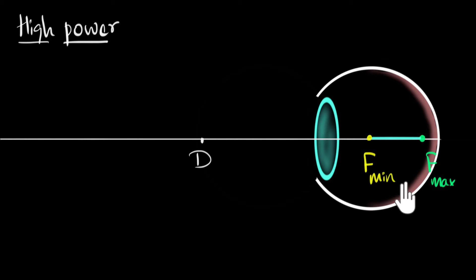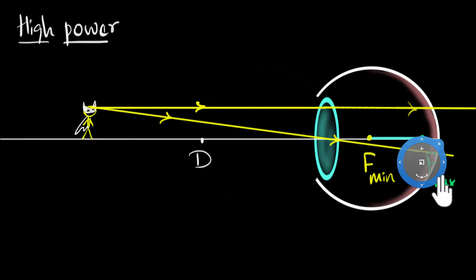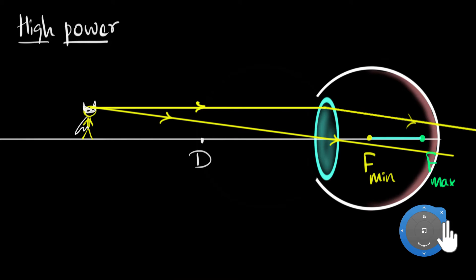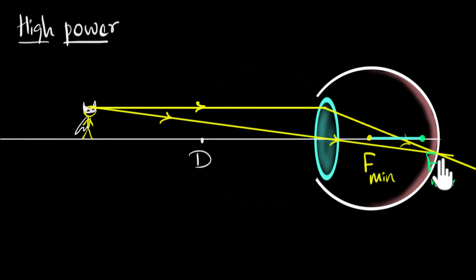So let's look at what happens when we keep an object close to us, and when we keep an object far away. Consider an object close to us — say Batman standing close. Drawing the rays of light: the ray through the optic center goes undeviated, and the ray parallel to the principal axis must meet it and focus right at the retina. The answer is yes — our eyes can easily do that, because the required principal focus lies within the range it can take. So there's no problem looking at things close to us.